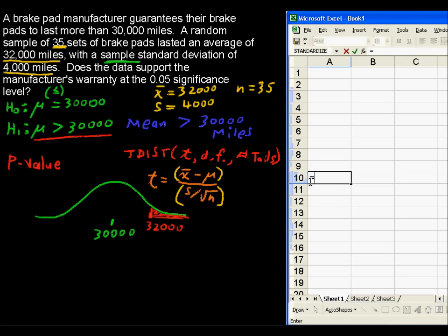So, tdist equals tdist, and like I promised, I open up the parentheses to start this function, but I'm going to open up another set of parentheses for this x-bar minus mu. So that's 32,000 minus 30,000. Close the parentheses. I'm not closing it on the function, just for that numerator.